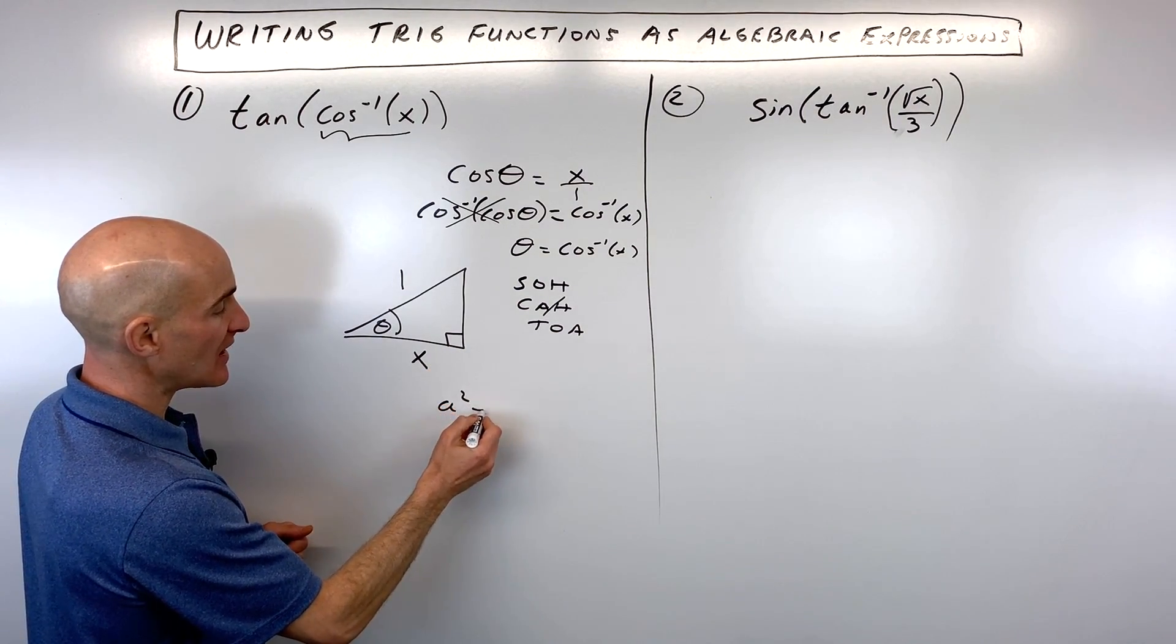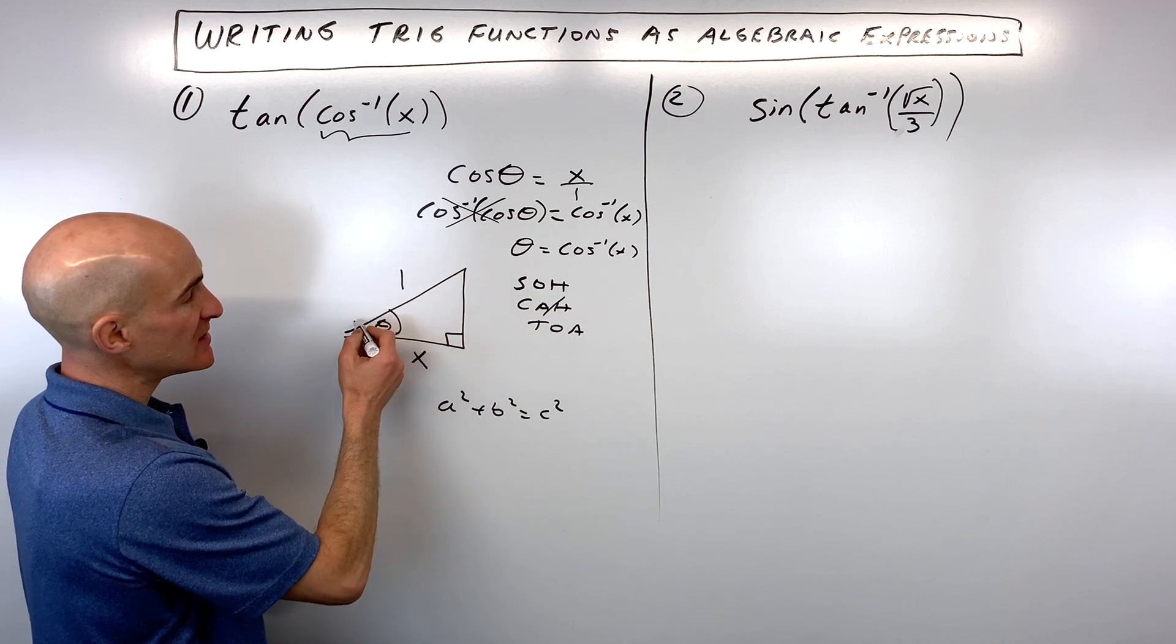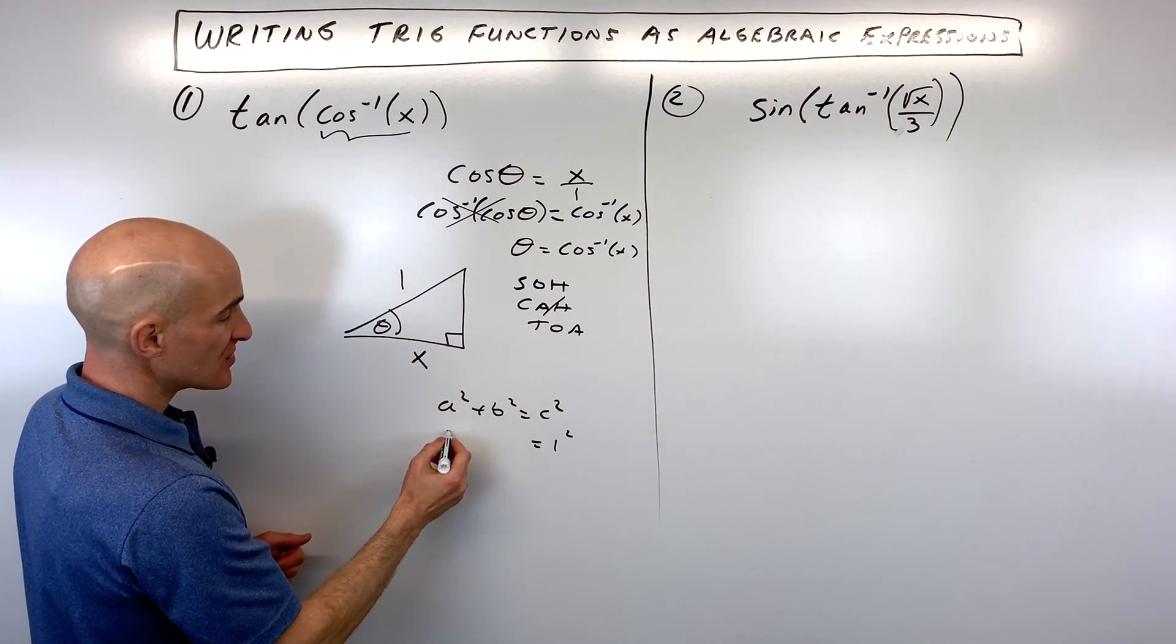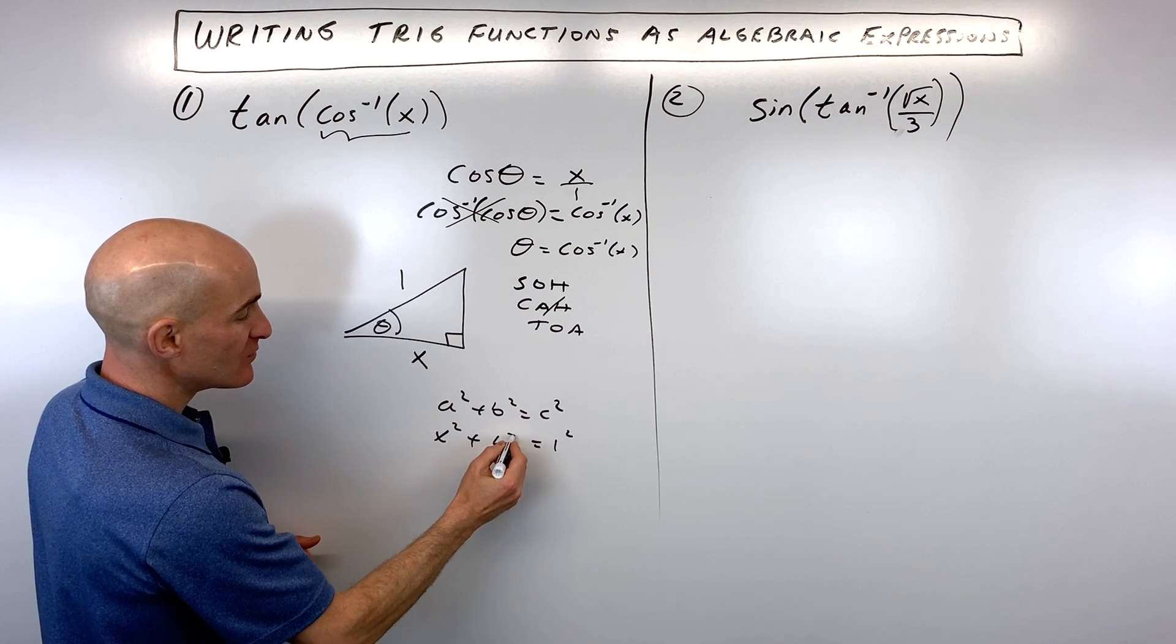So what we have here is a squared plus b squared equals c squared. c, of course, is the hypotenuse. So that's one squared. Let's call this a. So this is x squared plus b squared.